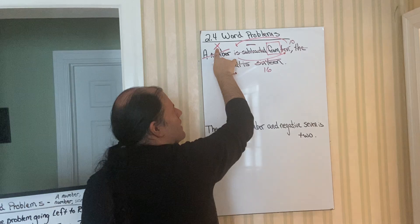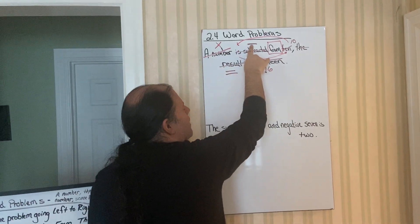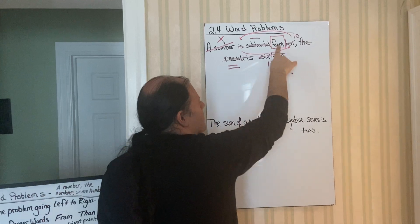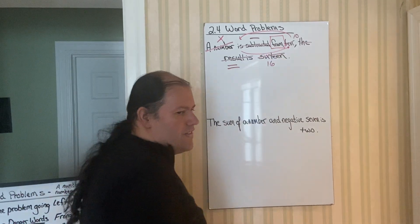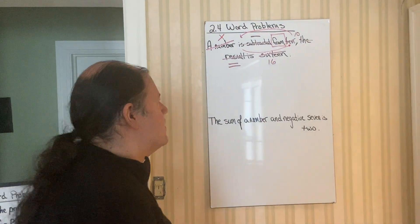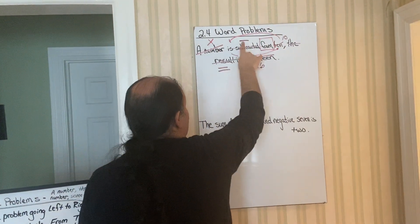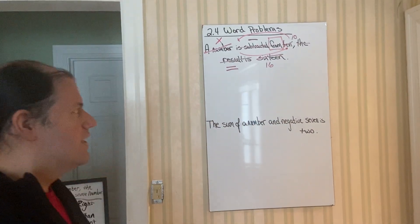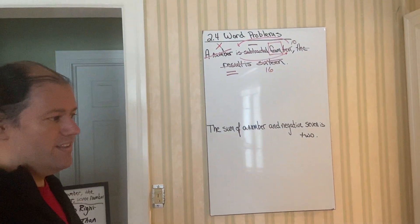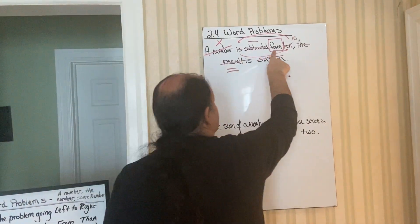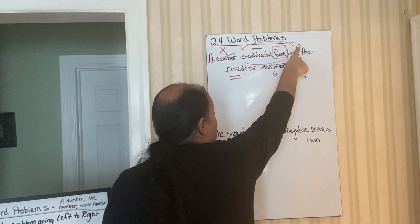So normally, we would do x minus 10 equals 16. But remember, we had that danger word. That's the reason why I tell you to box it. Because if you go too fast, and you didn't see it, you might have said x minus 10 equals 16. And you would have solved it and thought that x would equal 26. Oh, go slow. Because this is boxed. Uh oh, pivot.